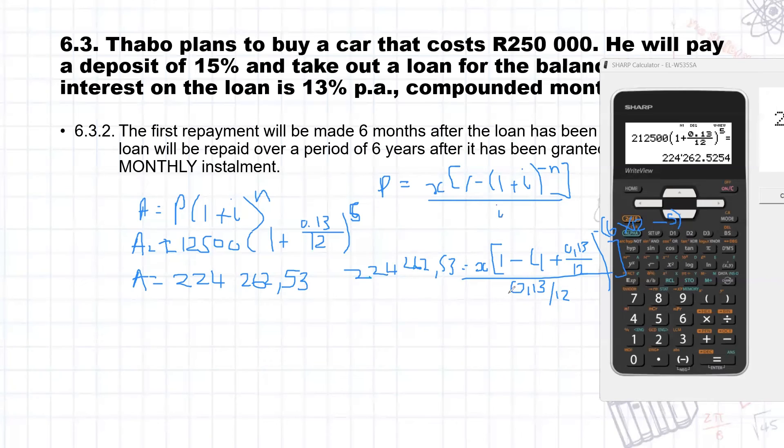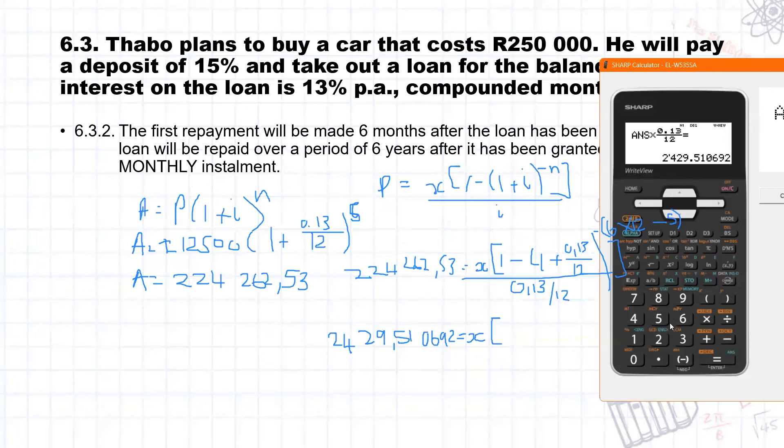All right. So we need to get X by itself. So what I'm going to do is take this to the other side. On my calculator I'm actually just going to multiply this answer by 0.13 over 12. And that is going to give me an answer of R2,429.51069 equals X.